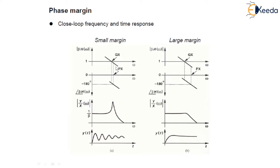Here we have considered a marginal case where a small margin exists between the gain crossover frequency (ωgx) and the phase crossover frequency (ωpx), as depicted in this figure. The gain crossover frequency is slightly below the phase crossover frequency, and we have taken an example where it occurs at a phase angle of minus 175 degrees. When we draw the closed loop transfer function, we see a sharp peak in the vicinity of ω equals ω₁.